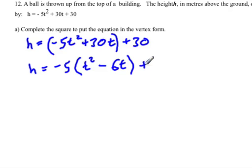And we have to now make sure you write the plus 30, bring it down from above. We have to make what's in the bracket into a perfect square trinomial in order to put it into vertex form.